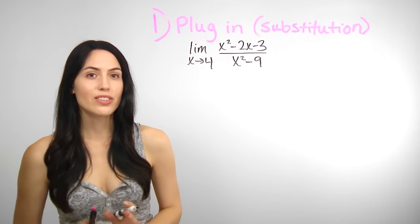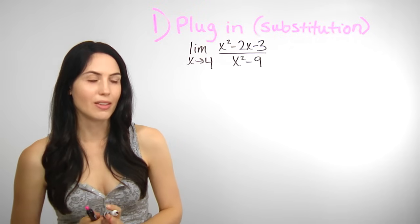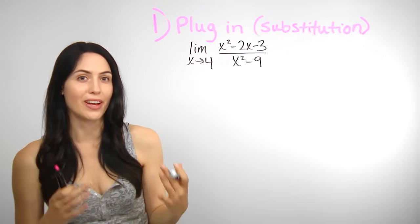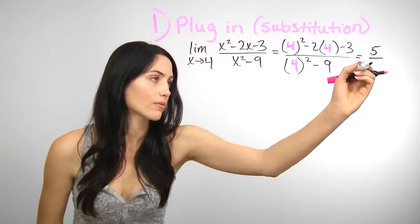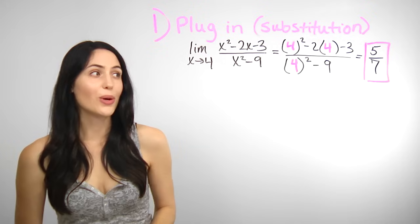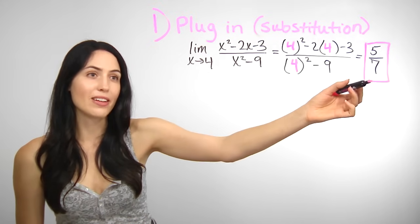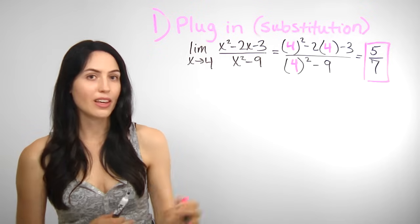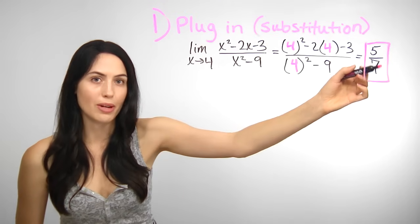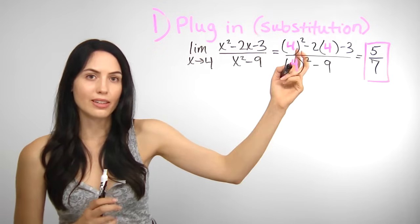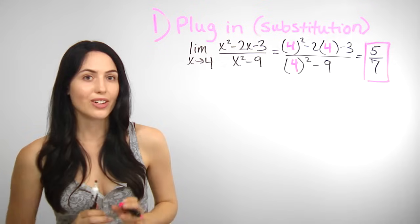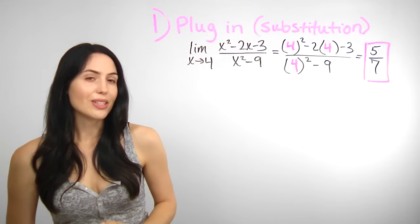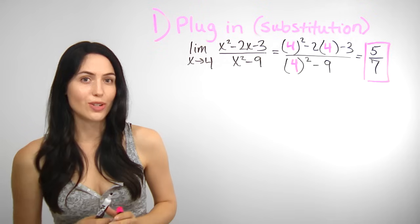With these limit problems, the first thing you should always try is to plug in the value. Plug in 4 for x everywhere x appears, and see if you get a value for the limit. So you got an actual number for the limit, a finite value. Five sevenths is a finite, unique number — that is your limit. The limit is equal to five sevenths, and you're done. But if you ever get a zero in the denominator, or the form zero over zero, which is indeterminate, you have not found the limit. You'll need another technique. Before I show you another technique, here are some other common types of limits you can find just by plugging in.